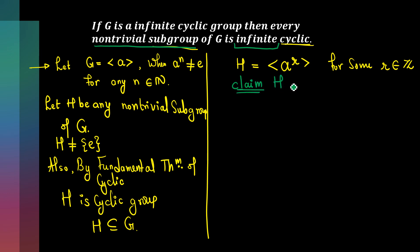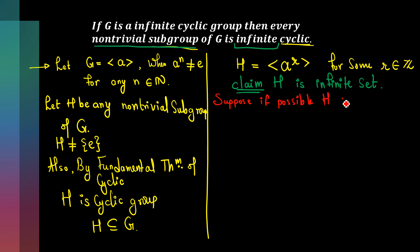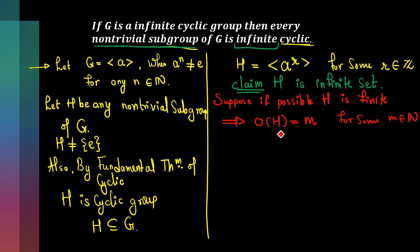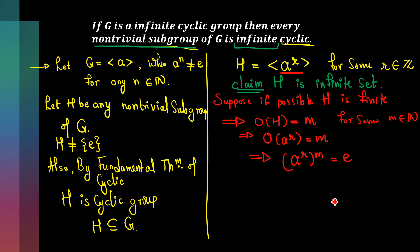The best way to prove H is infinite is by contradiction. Suppose if possible H is finite, so the order of H is some m in the natural numbers. If the order of H is m, then the order of a^r is also m. The meaning of the order of an element being m is that (a^r)^m equals the identity. Therefore, a raised to r*m equals the identity.